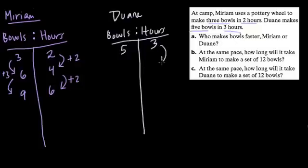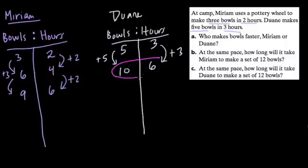If we double this, we add three here. The number of hours is six now. We don't add three to the number of bowls because it's five bowls per every hour. So now we have ten bowls over six hours. This is nice because now we can compare this to this. The same number of hours have passed for both people. Who makes more? The answer is Dwayne. Dwayne is able to make ten bowls in six hours. Miriam is making nine.